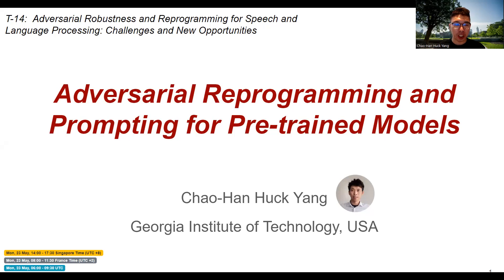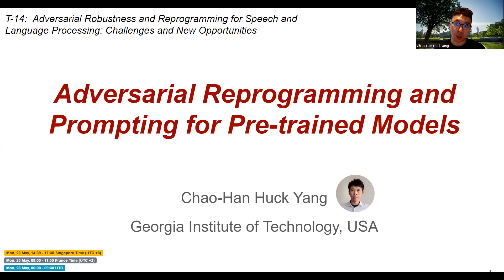Hello everyone, this is Huck. Welcome to INTERSPEECH 2022. This is tutorial number 14, Adversarial Robustness and Reprogramming for Speech and Language Processing: Challenges and New Opportunities. This is section two of this tutorial. The first part was introduced by Dr. Pinyu Chen from IBM Research, and the second part will be presented by me, Huck from Georgia Tech. In the second section, we introduce how we can handle pre-trained models with input transformation, which is similar to adversarial noise but trainable.